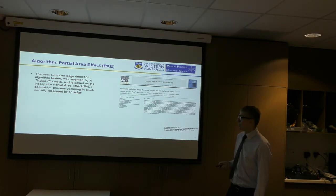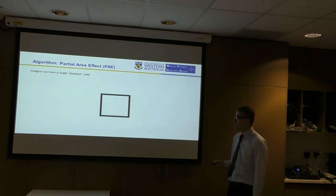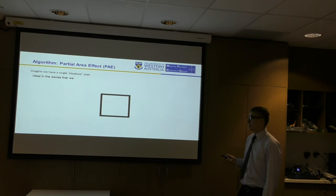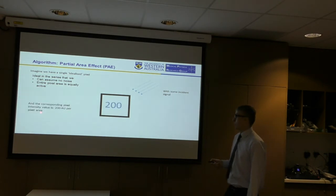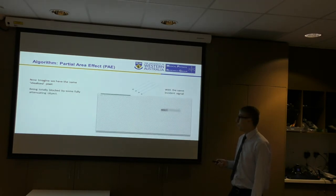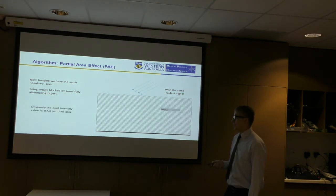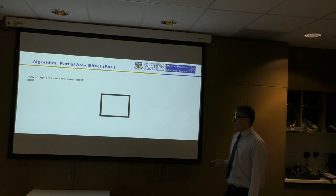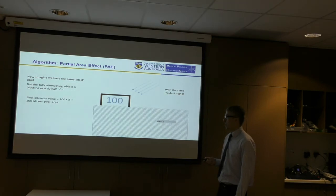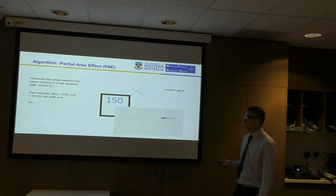The next algorithm tested is known as the partial area effect. This was invented by this research group, a Spanish team, and it's based on the idea of partial area effect acquisition process occurring in pixels. What is the partial area effect? This is probably easier to explain using a really oversimplified example. Imagine we have a single idealized pixel. Ideal in the sense that we can assume there's no noise. Entire pixel area is equally active. Now let's say we have some incident signal with some corresponding pixel intensity value, say 200 arbitrary units per pixel area. Now imagine the same idealized pixel, the same incident signal, but being totally blocked by some fully attenuating object, so it's completely covered. Obviously, none of the signal is getting through, and the pixel intensity value is going to be zero arbitrary units per pixel area. Now, the same ideal pixel, same incident signal, but this time the fully attenuating object is blocking exactly half of it. Obviously, in our ideal scenario, the pixel intensity value is going to be exactly half. This would extend if the object covered a quarter of the pixel, and so on.